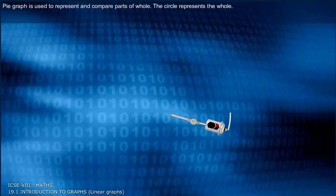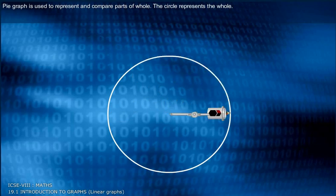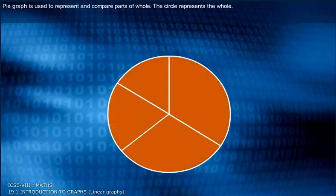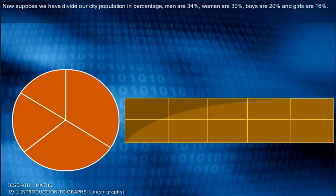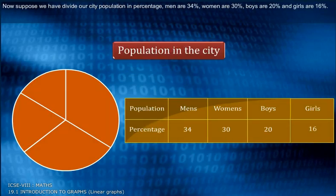Pie graph is used to represent and compare parts of a whole. The circle represents the whole. Now suppose we have divided our city population in percentage.